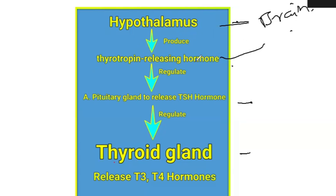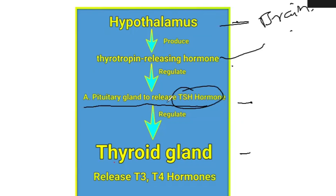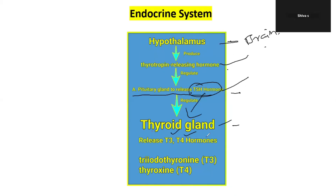Thyrotropin releasing hormone (TRH) is produced in the hypothalamus and acts on the pituitary gland to stimulate it. The pituitary gland then produces TSH — thyroid stimulating hormone. TSH stimulates the thyroid gland to produce T3 and T4 hormones. The thyroid gland also produces calcitonin.